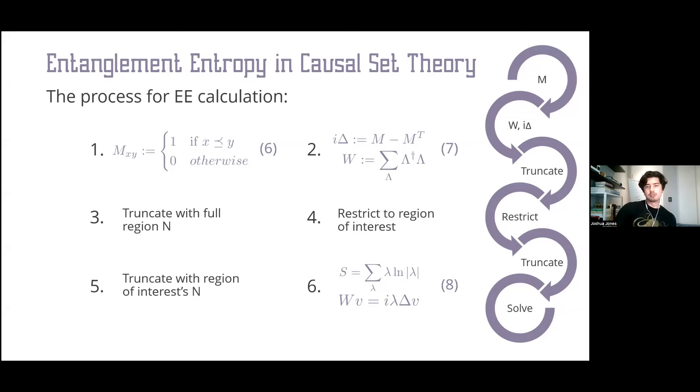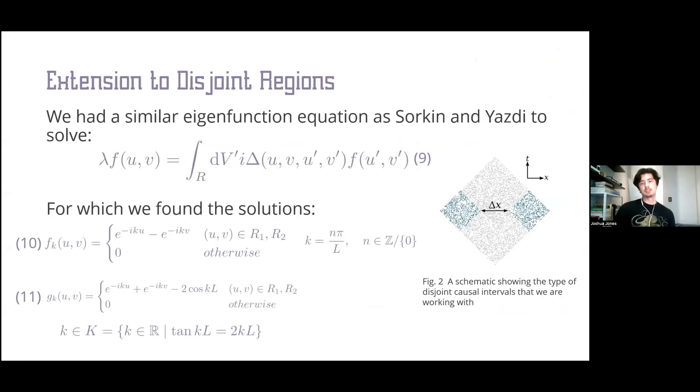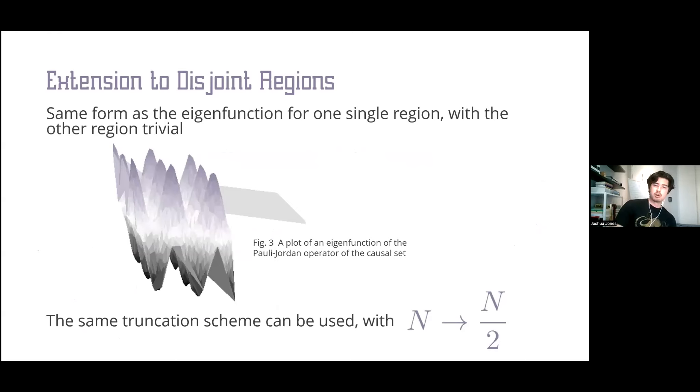Now we understand the full process, we can see how to modify it for disjoint regions. We return to the continuum theory and consider the Pauli-Jordan function for the disjoint intervals shown in Figure 2. Solving this eigenfunction equation gives us solutions equations 10 and 11. What's more important than the exact functional form is that they are of the form of one single region's eigenfunction on one causal diamond whilst trivial in the other. An example is an eigenfunction of the Pauli-Jordan operator generated from a causal set we're working with.